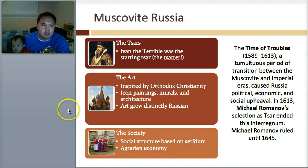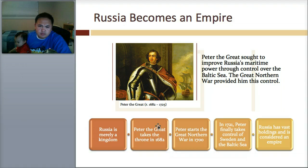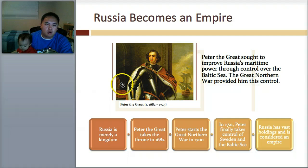Moving on — Russia becomes an empire. If you follow this timeline, Russia is merely just a kingdom at first. Then Peter the Great takes the throne in 1682. He then starts the Great Northern War in 1700. Peter finally takes control of Sweden and the Baltic Sea, and Russia, with its vast holdings, is now considered an empire. He sought to improve Russia's maritime power through control over the Baltic Sea, and this Northern War gave him power over the north of Europe.